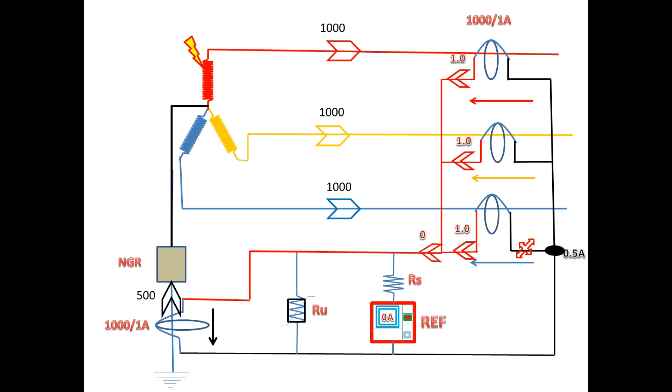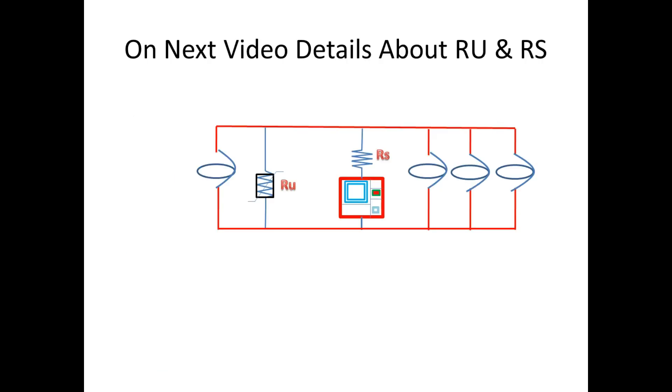The next path for current flow is the REF relay. So all the current enters the REF relay through the stabilizing resistor. Once it enters the relay, it will start to pick up and trip according to the relay setting. Once it trips the breaker, the fault will be isolated from the IN-zone of the REF.